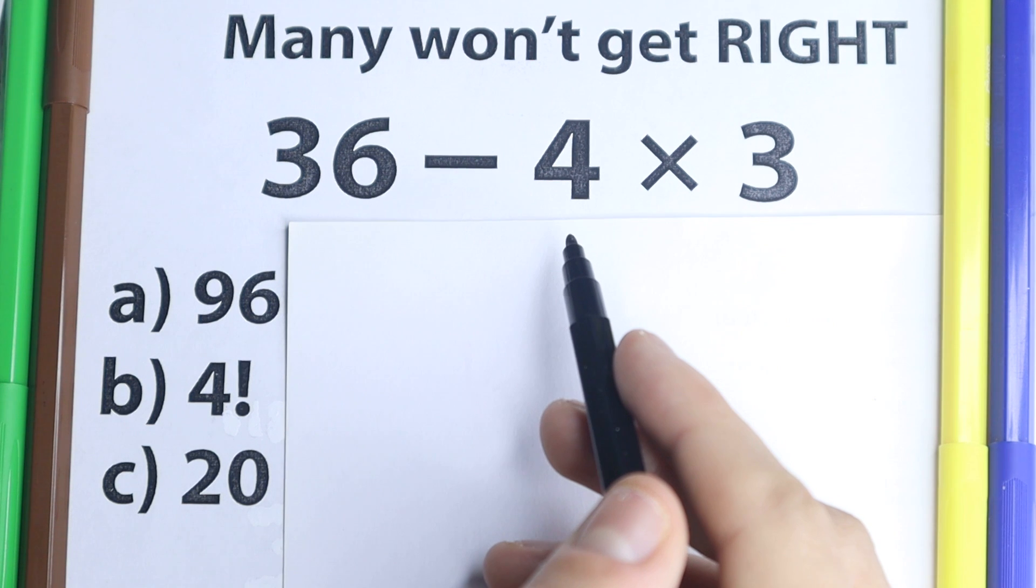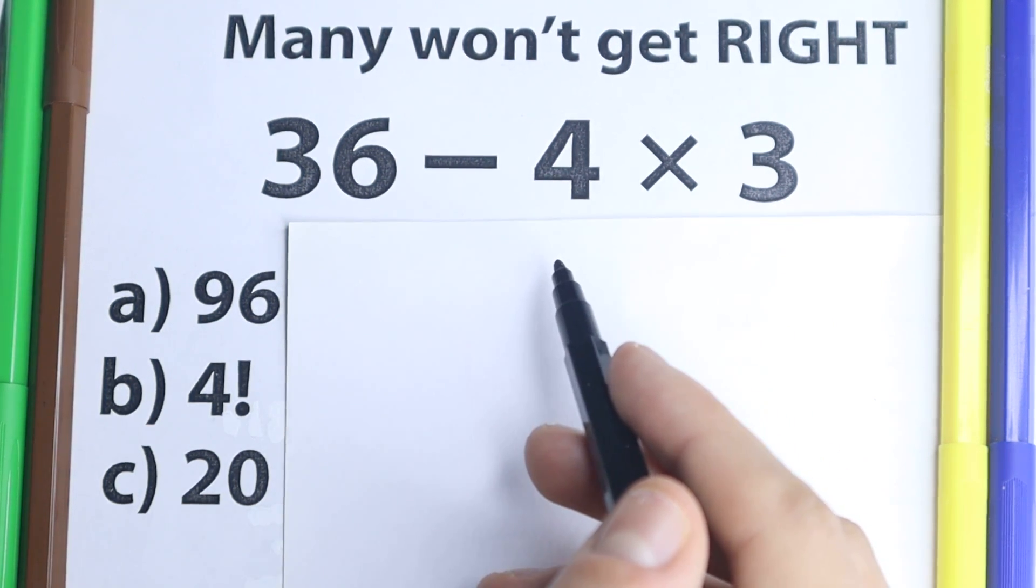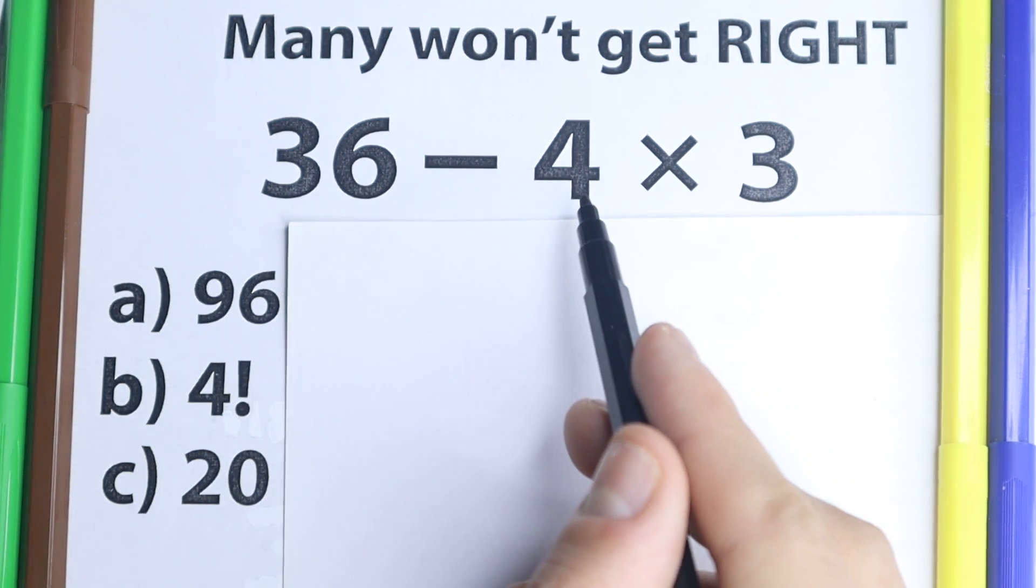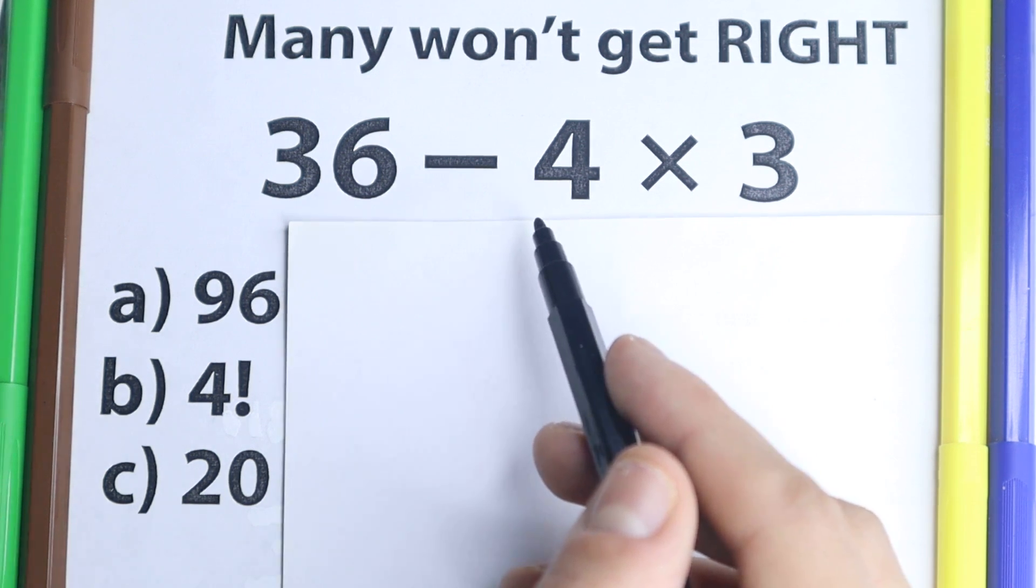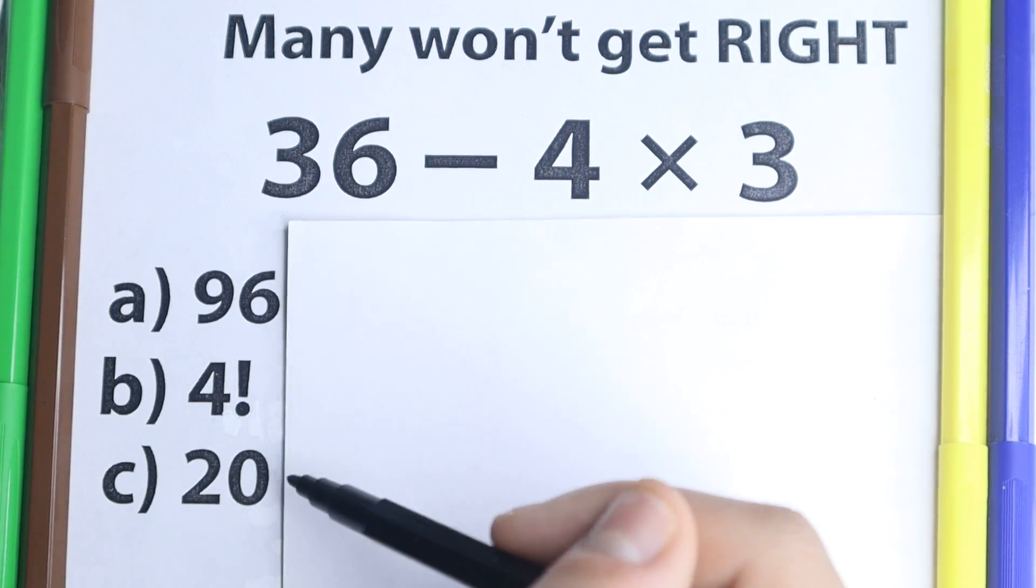You don't need to use your calculator right here, because as you can see a very simple problem. We have 36 minus 4 times 3. So what is the correct answer? Of course most of you out there are like, yes I can handle this problem, this is basic subtraction, basic multiplication, I learned this stuff in the third grade. So go ahead and put your answer down into a comment section, we have three options A, B and C.